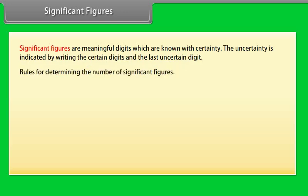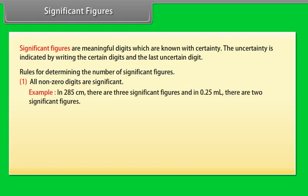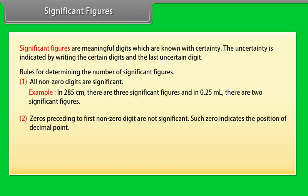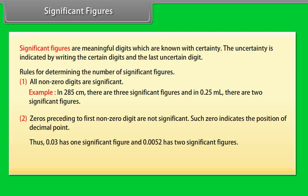Rules for determining the number of significant figures: All non-zero digits are significant. In 285 cm there are three significant figures and in 0.25 ml there are two significant figures. Zeros preceding to first non-zero digit are not significant. Such zeros indicate the position of decimal point. Thus, 0.03 has one significant figure and 0.0052 has two significant figures.